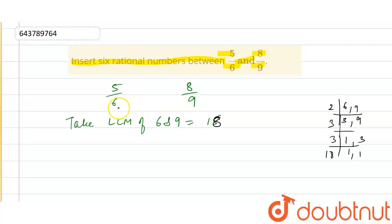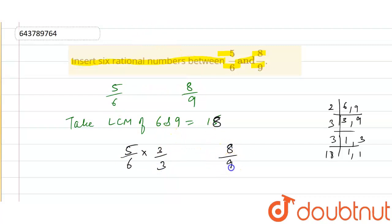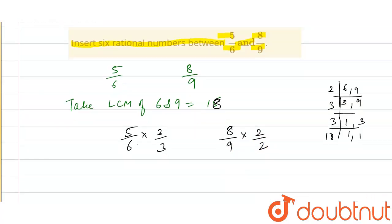Now we multiply 5/6 by 3/3 and 8/9 by 2/2, so that both denominators become 18. This gives us 15/18 and 16/18.